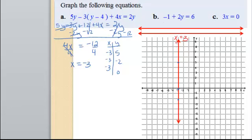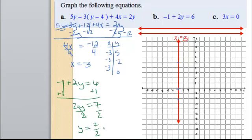How about b then? For b, we have negative 1 plus 2y equals 6. If we add 1 to both sides, we get 2y equals 7. If we divide by 2, we get y equals 7 halves. Which is the same thing as 3 and a half. That'll help us when we're trying to graph it.